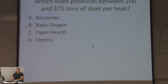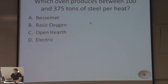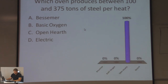Which oven produces between 100 and 375 tons of steel per heat? Bessemer, basic oxygen, open earth, or electric? You're 100% accurate if you chose open earth. Then we have a smiling answer indicator to tell you that you are accurate.